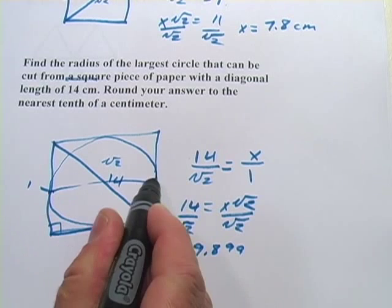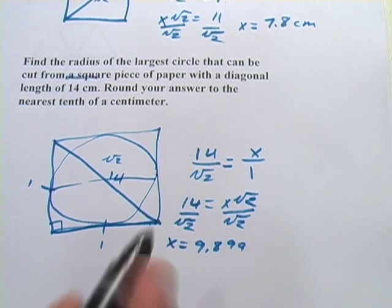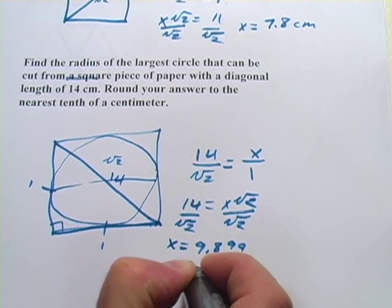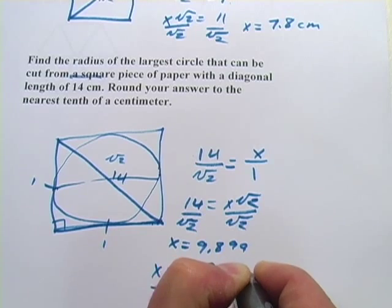That is the length of this side and what they're asking for really is the radius. And we've figured out the diameter. So we just need to cut this in two. So I'm going to divide that by two and we get 4.9 centimeters as our answer.